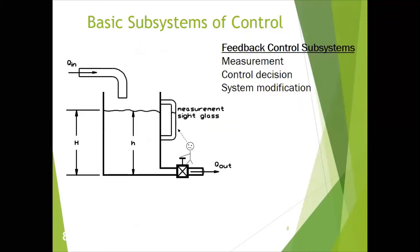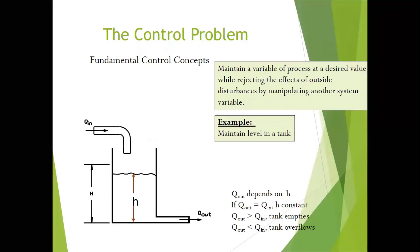Let us take one simple example — a control problem — to understand what the control problem is. This is an example of maintaining the water level in a tank. It has an input termed as quantity of water input Q-in, and quantity of water going out as Q-out. Suppose you have an objective to maintain the level of water at a particular height given by capital H — that is the system you have.